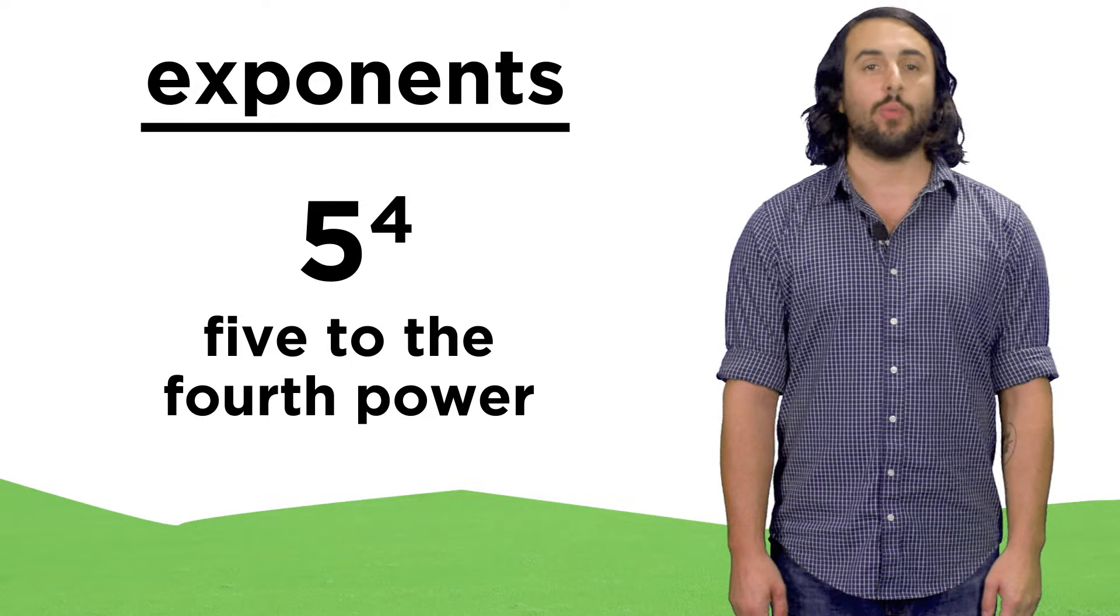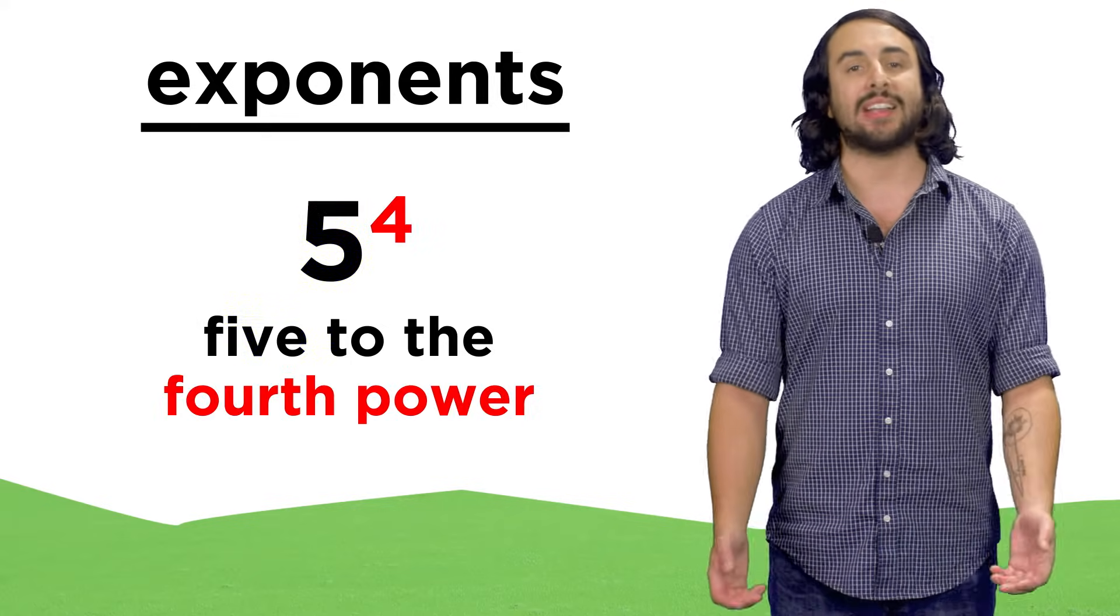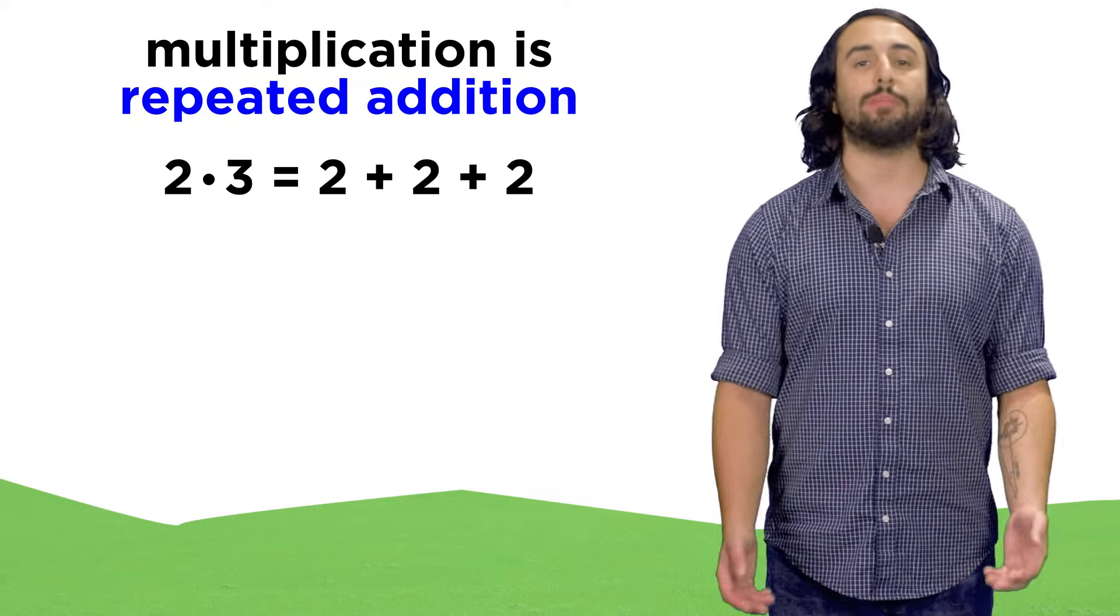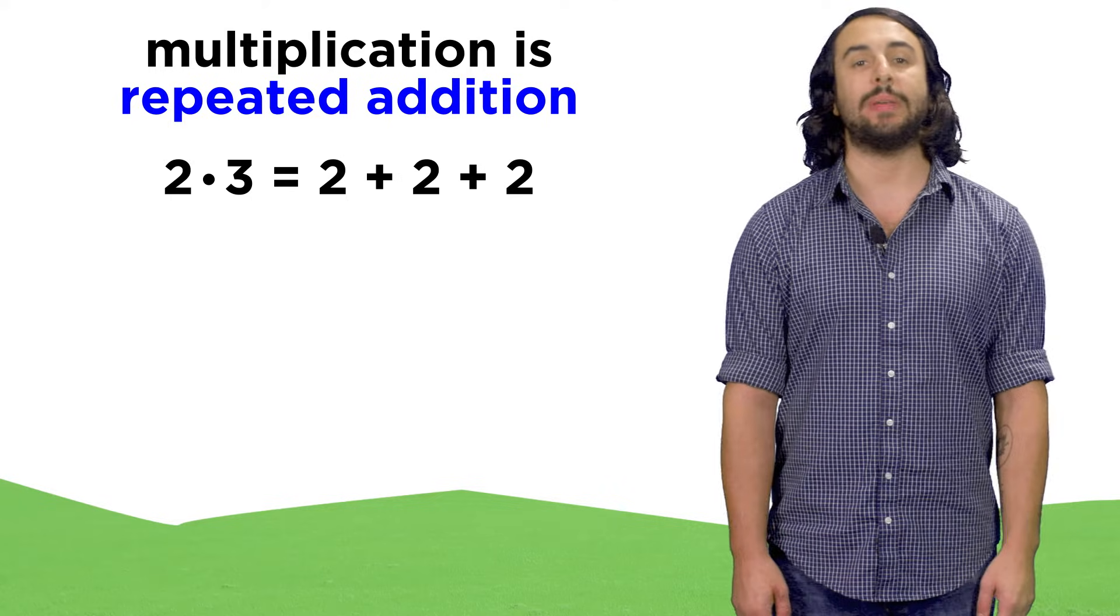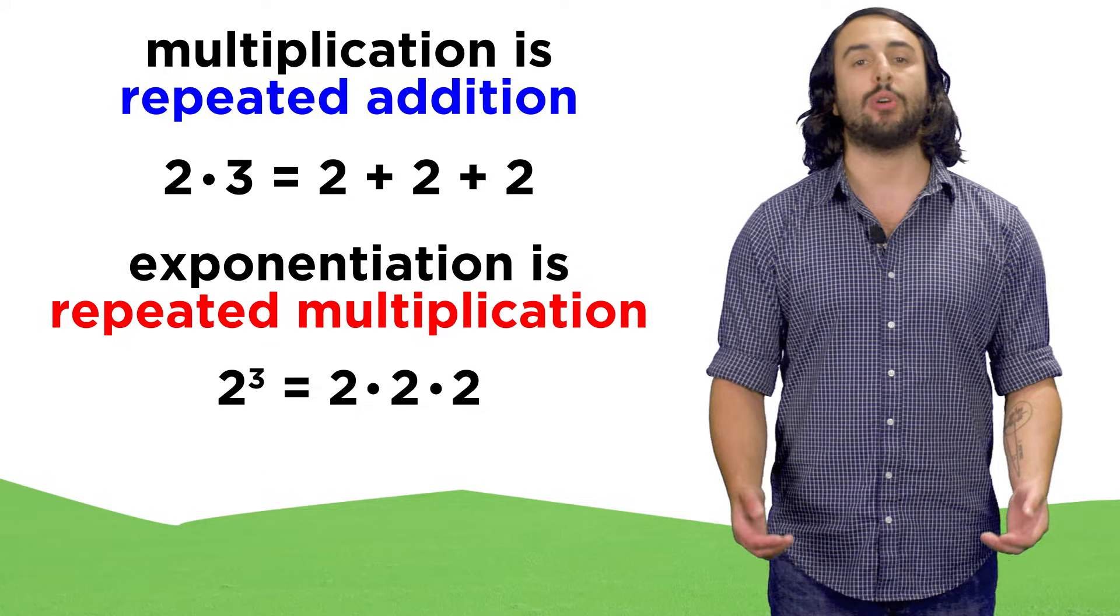When we do this, we have a base, which is written normally, and then an exponent, which is written as a superscript. Just the way that multiplication represents repeated addition, exponents represent repeated multiplication.